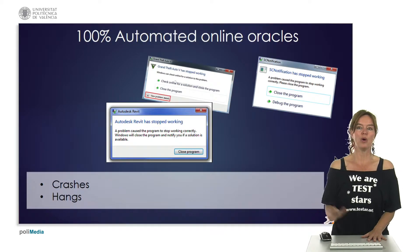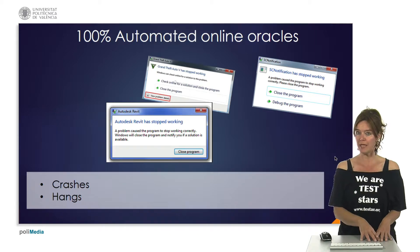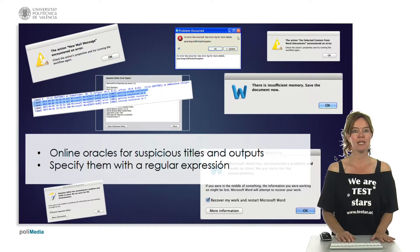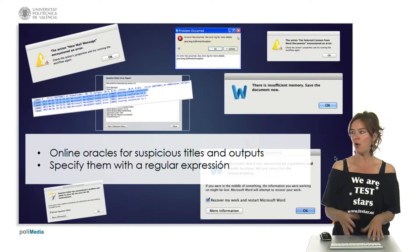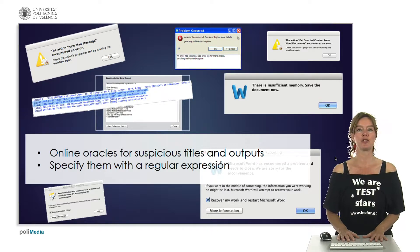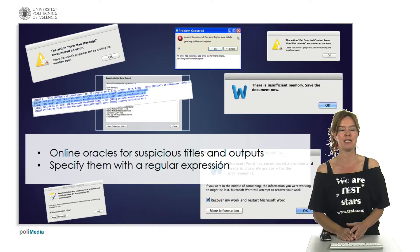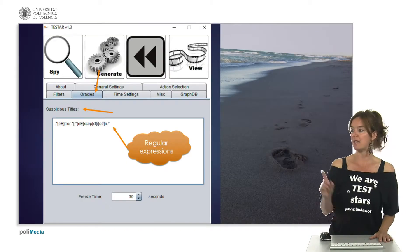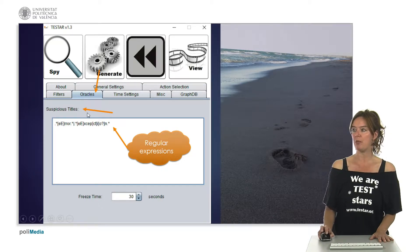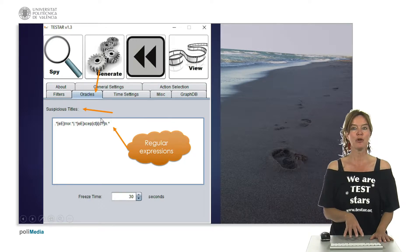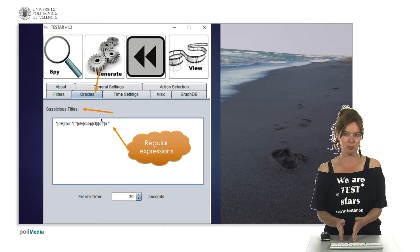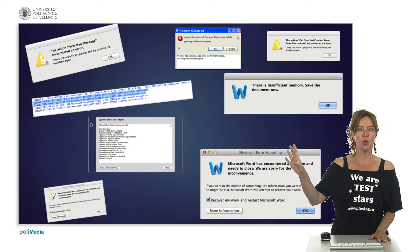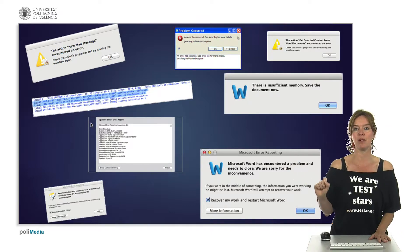This way we can find all kinds of crashes and hangs in applications - applications that just quit because they crashed or applications that hang and are not responding. Other things that we can find out of the box are oracles for suspicious titles and output. For example, any output on your screen that contains the words 'exception', 'error', 'problem', or things that you don't want your client to see - we can find them automatically through suspicious titles that we can specify with a regular expression. In the TestStar dialog there is a way to do that. In the Oracle Step there is a text field where we can put regular expressions that we want to match with suspicious titles.